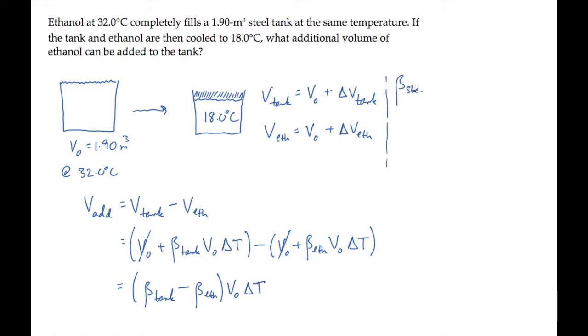The tank is made out of steel with a volume expansion coefficient of 3.6 times 10 to the minus 5 per kelvin. The ethanol coefficient is 7.5 times 10 to the minus 4 per kelvin. The temperature change delta T is the final minus the initial temperatures, giving us negative 14 kelvin.